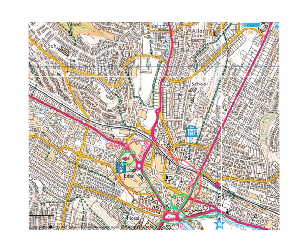If you have a look at this grid-like pattern of housing here, the straighter the lines of roads, usually the older the housing. Here you would find terraced housing, which is usually found close to the centre of a town. Further out you would see roads which are less straight,